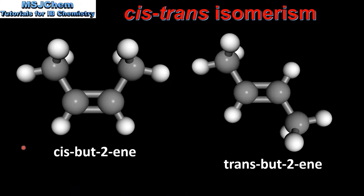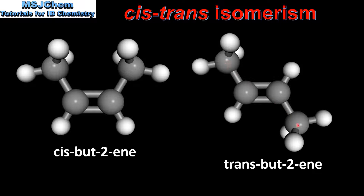Here we have 3D models of the cis-isomer on the left and the trans-isomer on the right. As we saw previously, the cis-isomer has two CH₃ groups on the same side of the double bond, and the trans-isomer has the two CH₃ groups on opposite sides of the double bond.